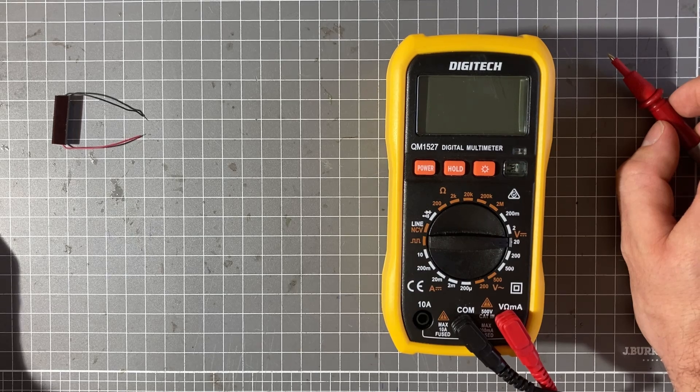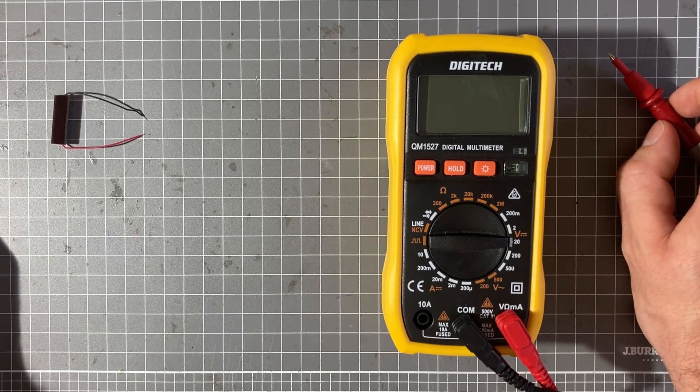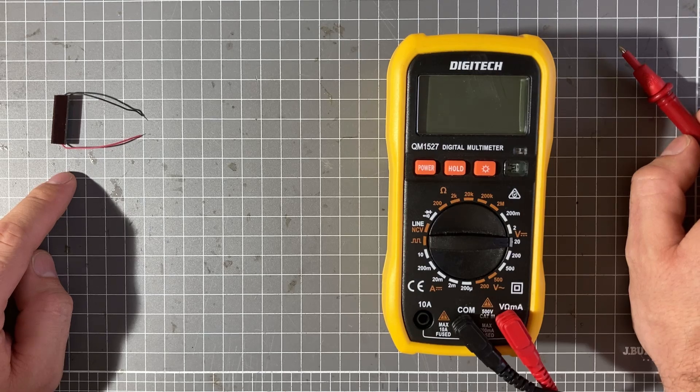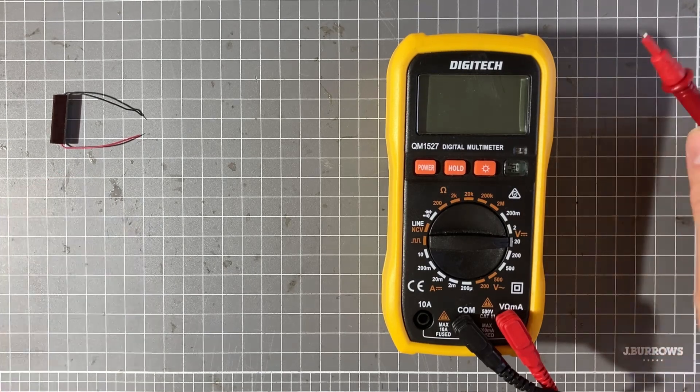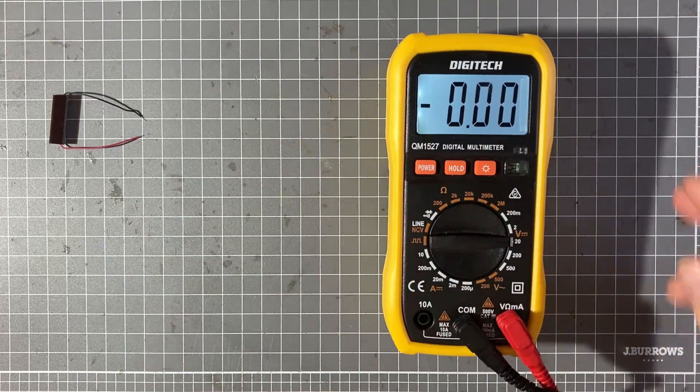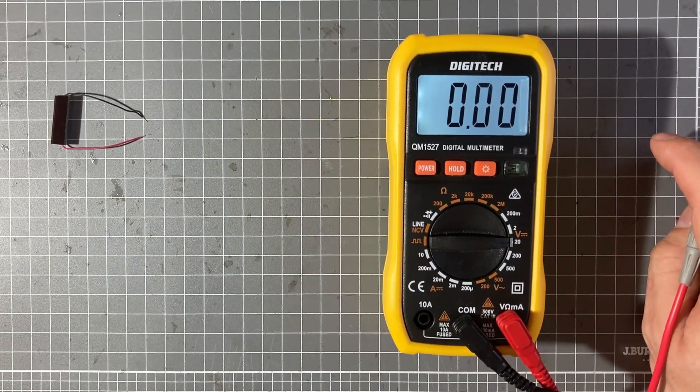So the first question we might have is why do we need any special circuitry at all? Why can't we just take this little solar cell and put it onto your robot in the place of a battery and call it a day? Well if we look at this, almost three volts, which is similar to what two AA batteries would produce.